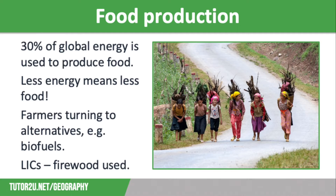It has many impacts. The first one is a decrease in global food production. About 30% of global energy is used to produce food — for example, to power farm machinery, for storage and transportation, and to manufacture fertilisers and pesticides. Less energy means less food can be produced, which in turn has an impact on food security.